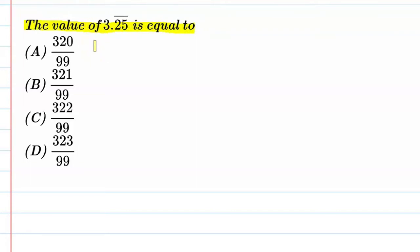This question means you are given a non-terminating repeating decimal expansion, that is 3.25 bar, meaning 25 25 is repeating. You have to convert this to a rational number. Let's start, this is a very simple question.